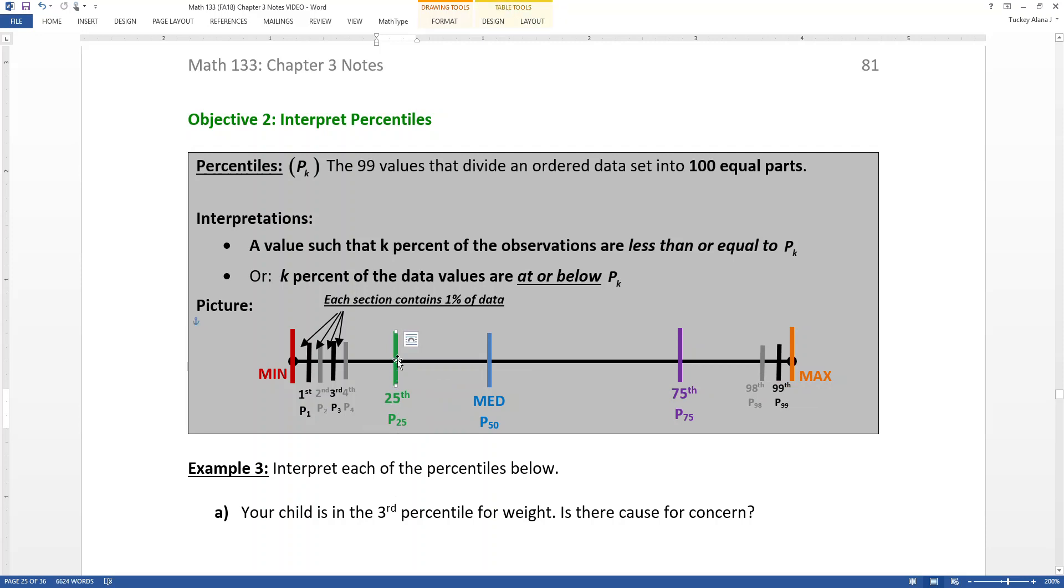Now before I go on, you might be thinking, was I insane when I put the green and the blue ones close together and the purple one farther away? Did I do that on purpose? The answer is yes, I did. Because the amount of percent that's in each section is equal. So each section contains a percent, a percent, a percent, right? But they don't have to be equally spaced. Sometimes they're closer together, sometimes they're farther apart. So it could be 1% of the data is in that zone, or it could be 1% of the data is in that itty-bitty zone, right?